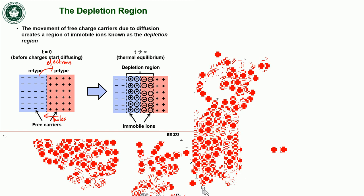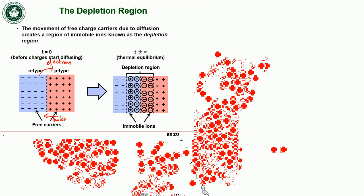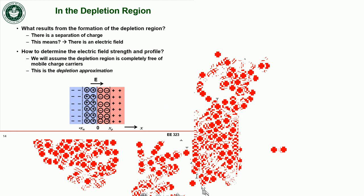When we form this depletion region, we have a spatial separation of charge. A spatial separation of charge is associated with both an electric field and a capacitance. The electric field arrow points from the positive side toward the negative side. We want to figure out the field strength, so we'll make some approximations.